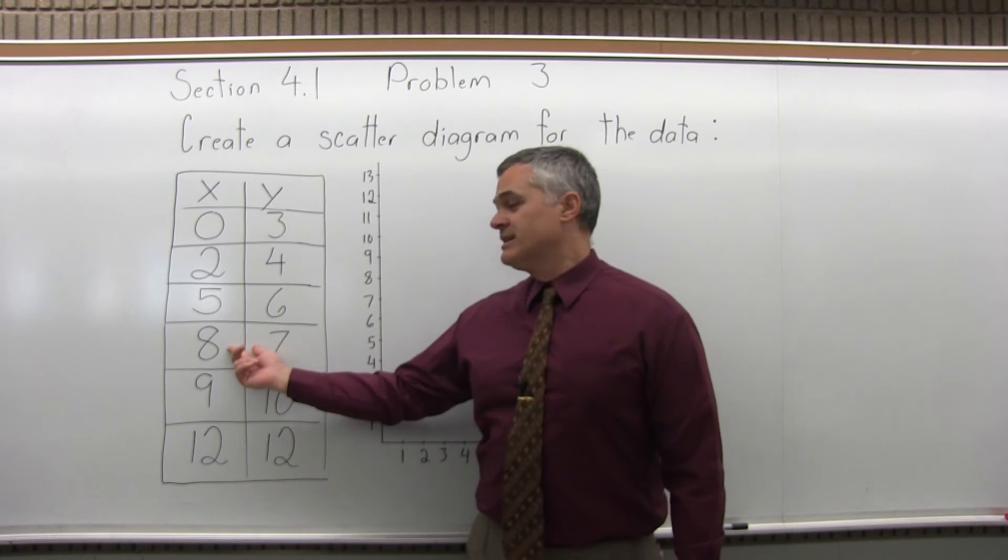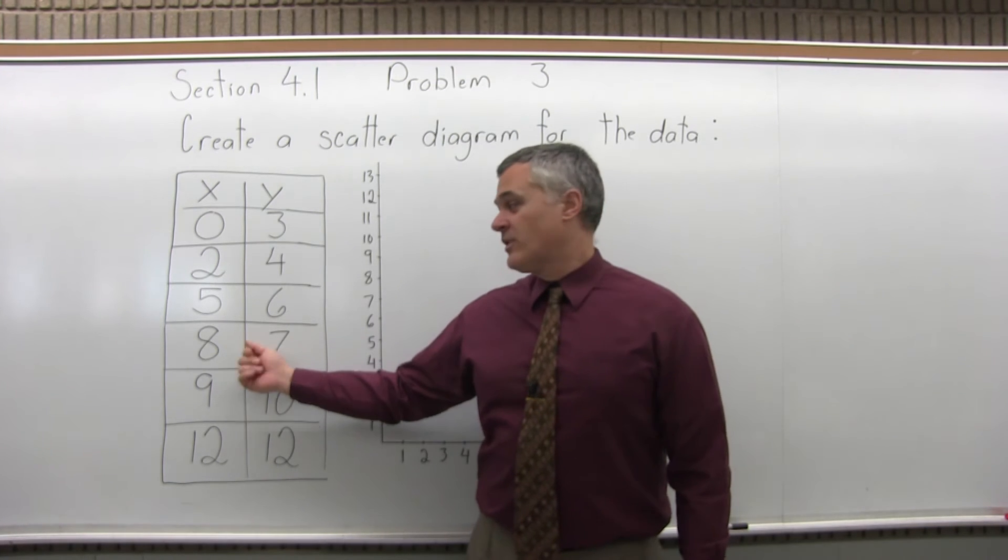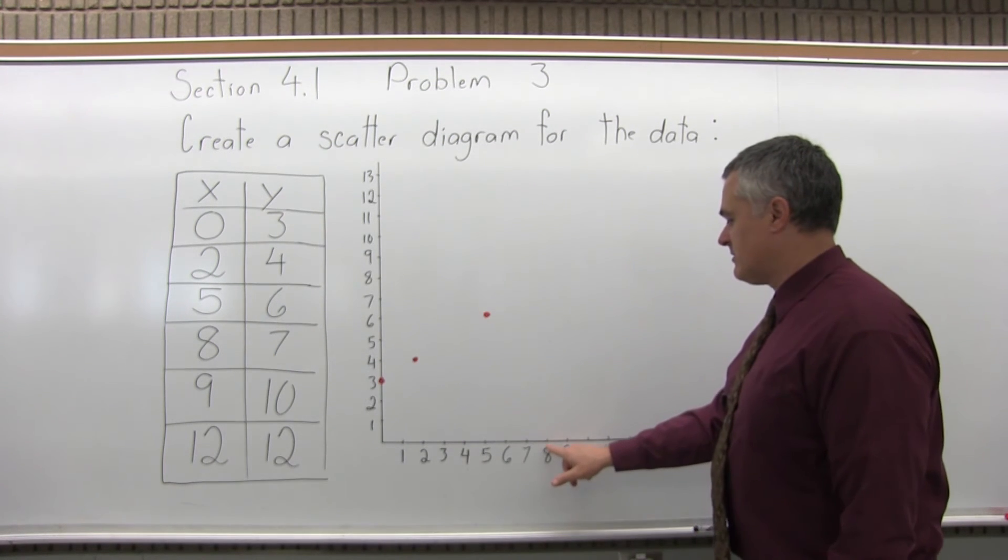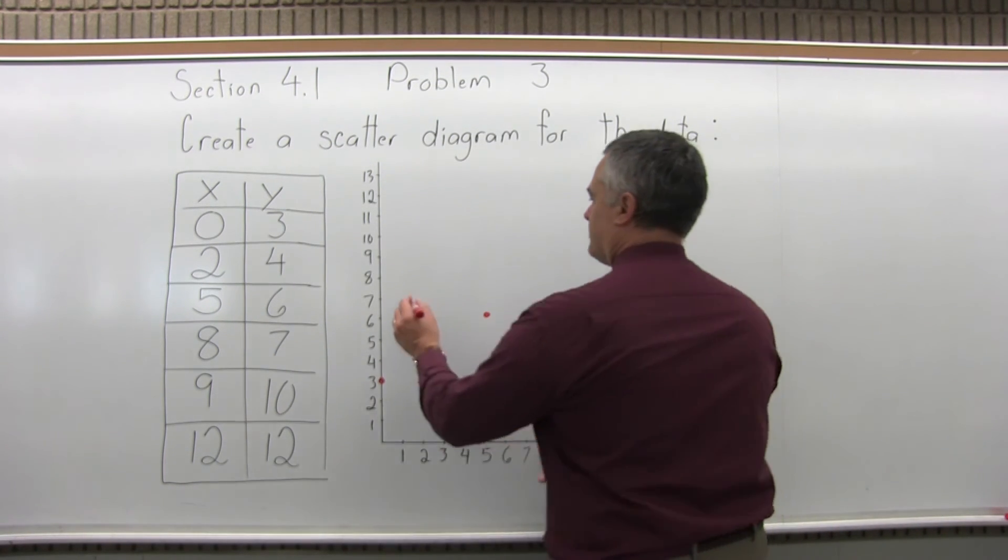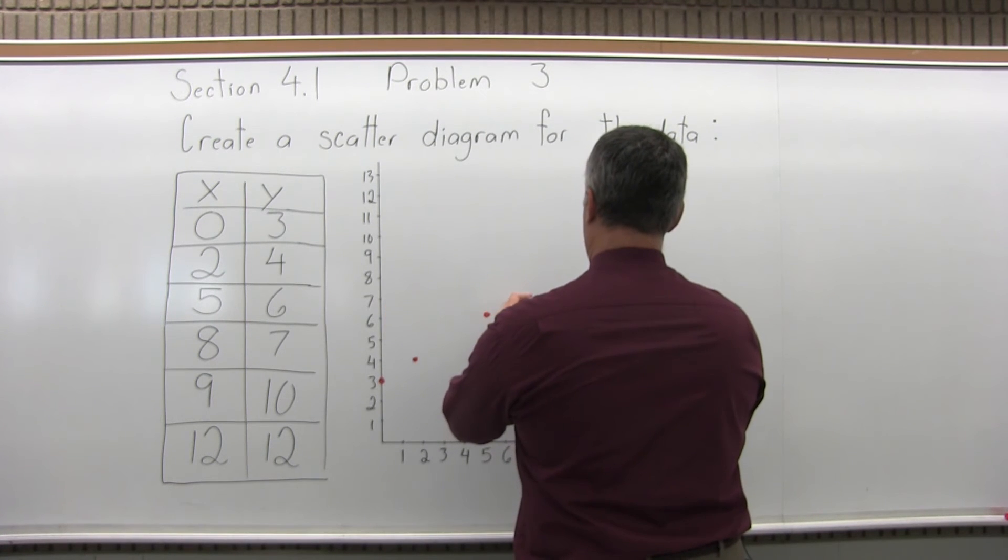And the next point is 8, 7. 8 for x, 7 for y. So over 8, the x value, up 7 for the y value.